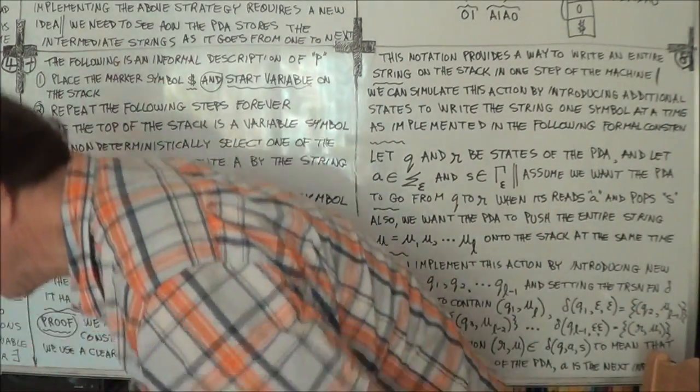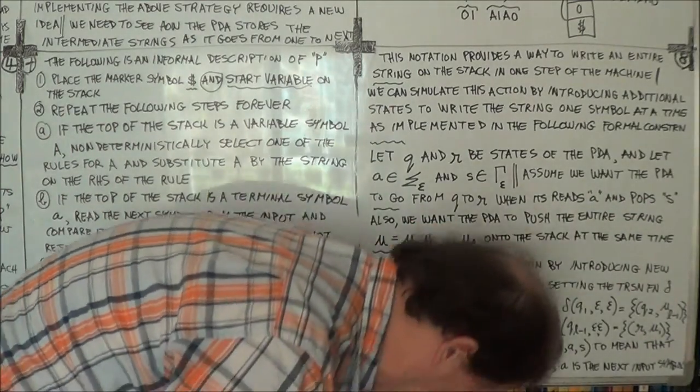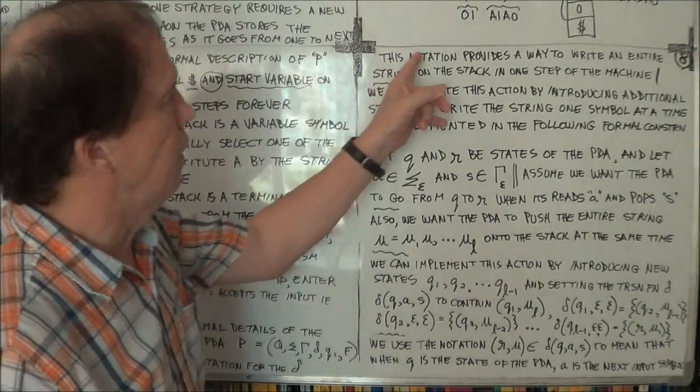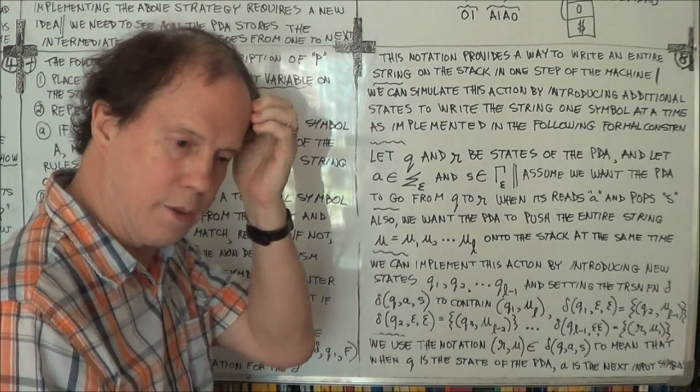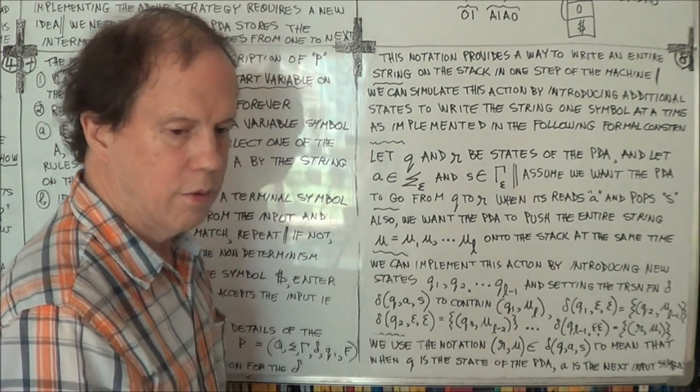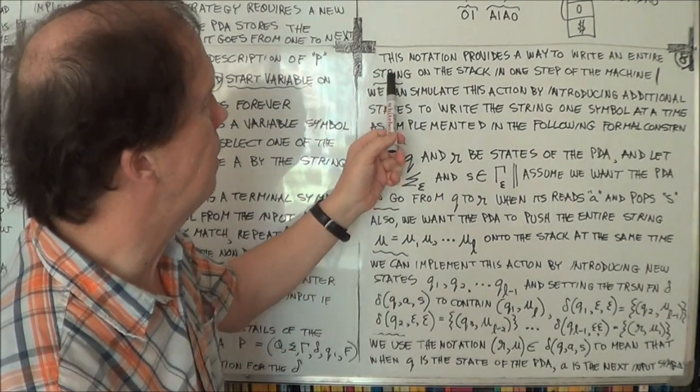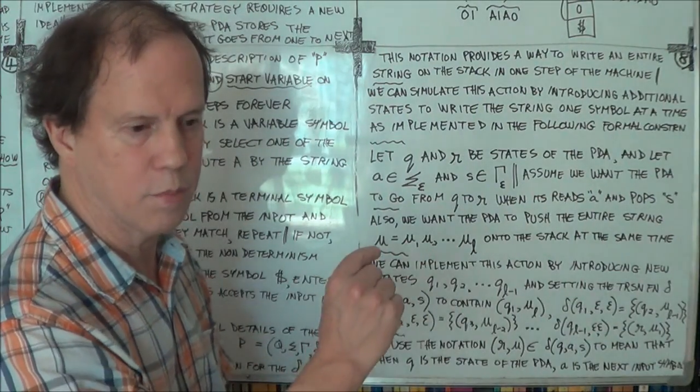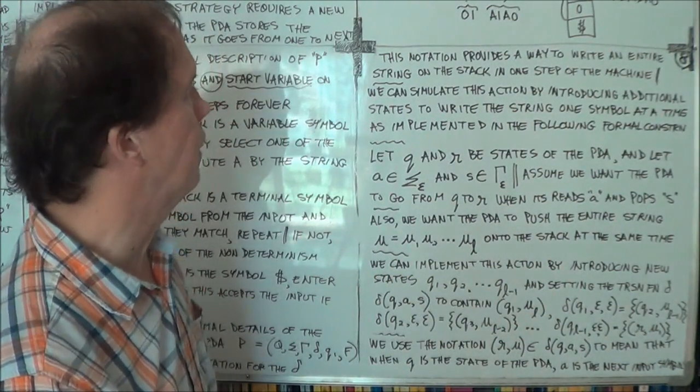We've got a useful, very useful shorthand. So we'll change the notation a little bit for the delta, the transition function, to speed things up. It'll allow us to write an entire string. Not just one symbol, but a whole string of symbols onto a stack.